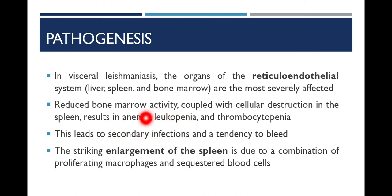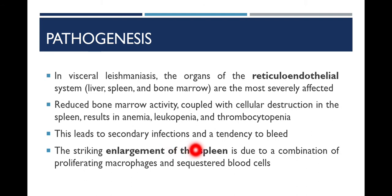The striking enlargement of the spleen is due to the combination of proliferation of macrophages and sequestered blood cells. The spleen is markedly enlarged because of the proliferation of macrophages within it and the sequestering and destruction of infected macrophages in the spleen. The combination of these two activities results in the marked enlargement of the spleen.